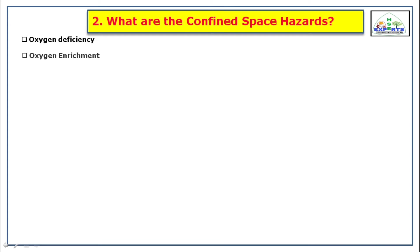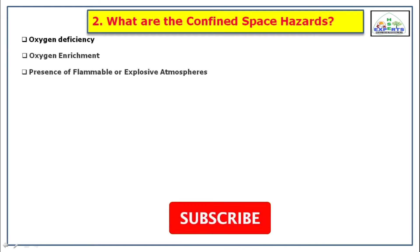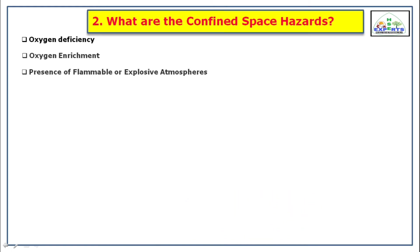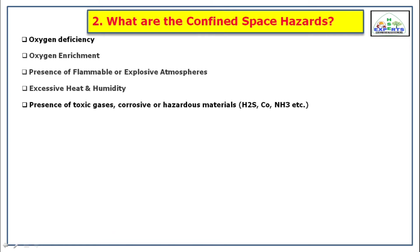Some materials which do not burn in air may burn violently or even spontaneously in an enriched oxygen atmosphere. The third common hazard is presence of flammable or explosive atmosphere. A flammable atmosphere presents a risk of fire or explosion, which can arise from flammable liquids or gases, or a suspension of combustible dust in air. If a flammable atmosphere inside a confined space ignites, an explosion may occur. Other hazards include excessive heat and humidity, and presence of toxic gases such as H2S, CO, NH3, etc.